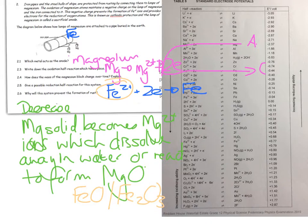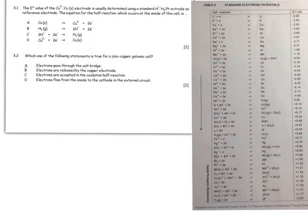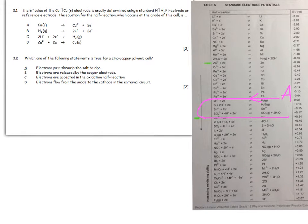Now on to the multiple choice. The E⁰ value for a copper electrode is determined using a standard platinum hydrogen electrode as a reference. The equation for the half reaction at the anode is going to be the one going backwards, so it's B.